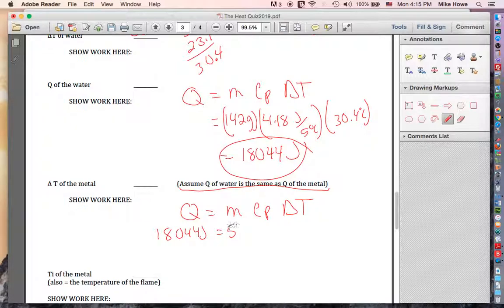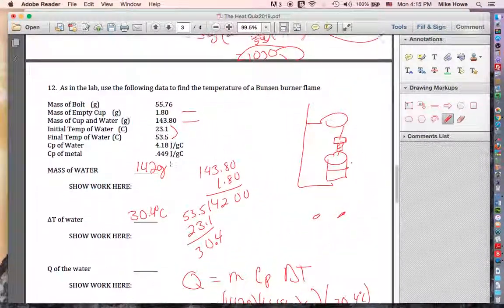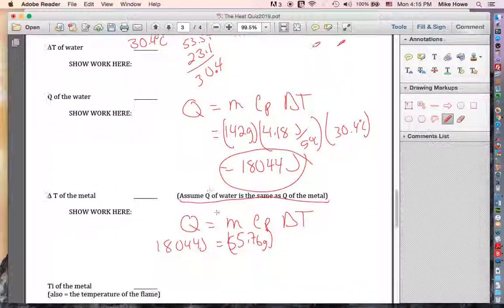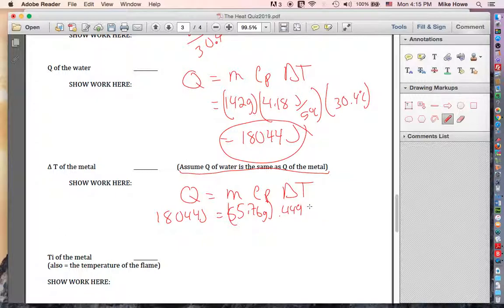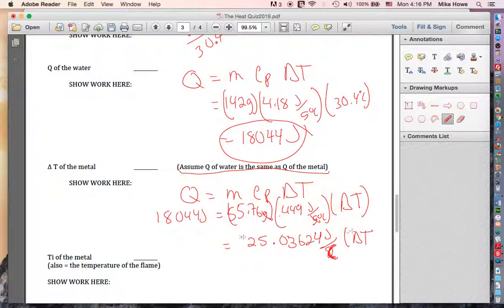So we go back up and look for that. Write it down. 55.76. The heat capacity of the bolt I put up here also, it's 0.449 right there, joules per gram degree C. And the change of temperature, we don't know. We're trying to find that. So we just put delta T there. So now I'll go ahead and multiply these numbers together. So 55.76 times 0.449. So I get 25.03624. Grams canceled. So that's J over C multiplied by delta T. And that still equals 18,044.